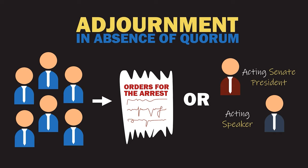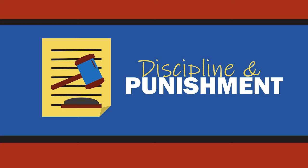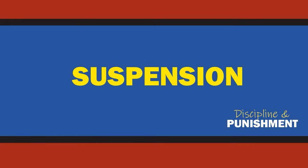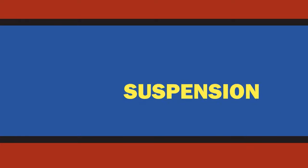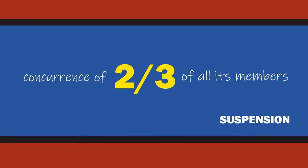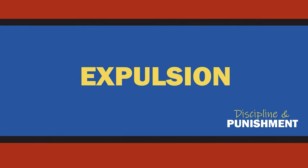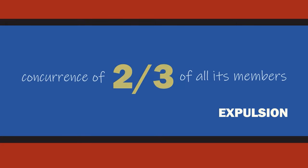Next, discipline and punishment: the constitution grants each house broad powers to discipline its members who are physically, mentally, and morally unfit. First, suspension — Congress can suspend a member with the concurrence of two-thirds of all its members. Second, expulsion — Congress can expel a member with the concurrence of two-thirds of all its members, and suspension shall not exceed 60 days.